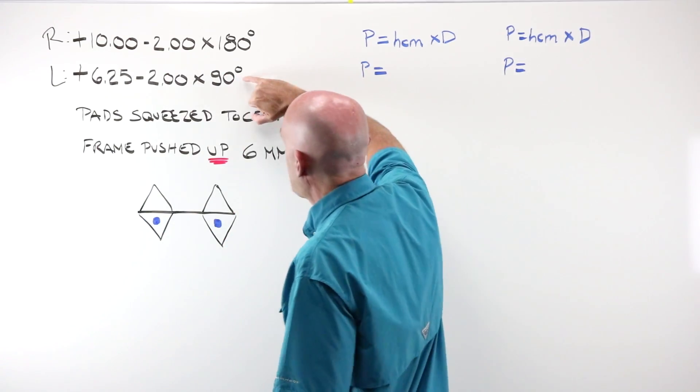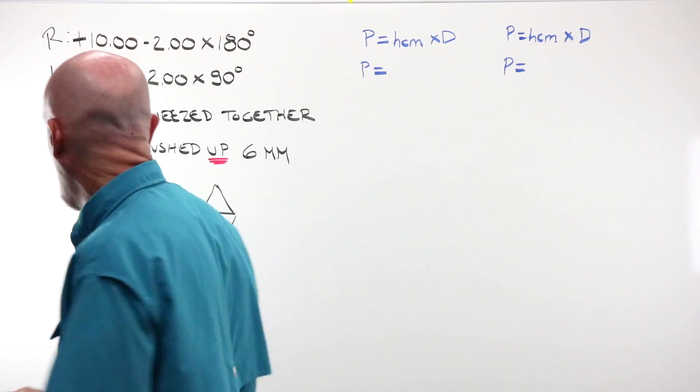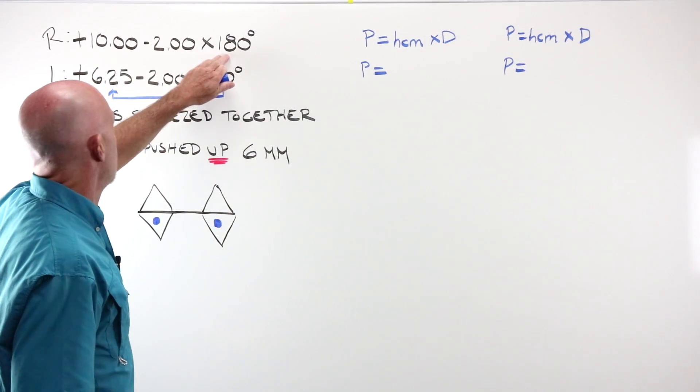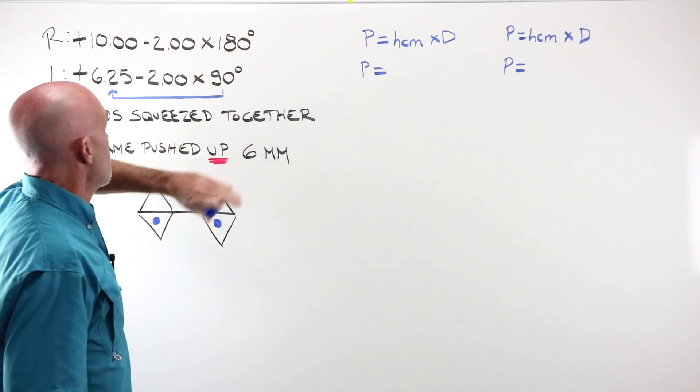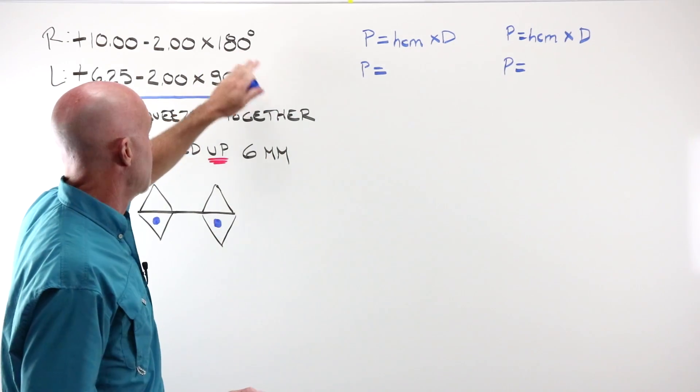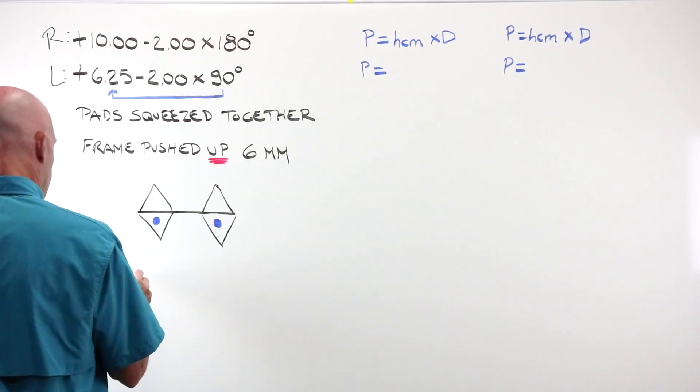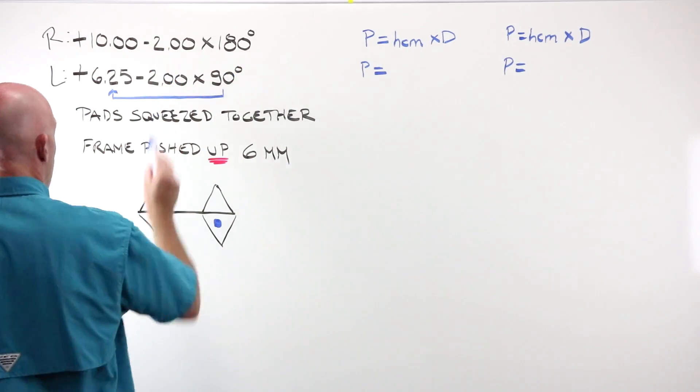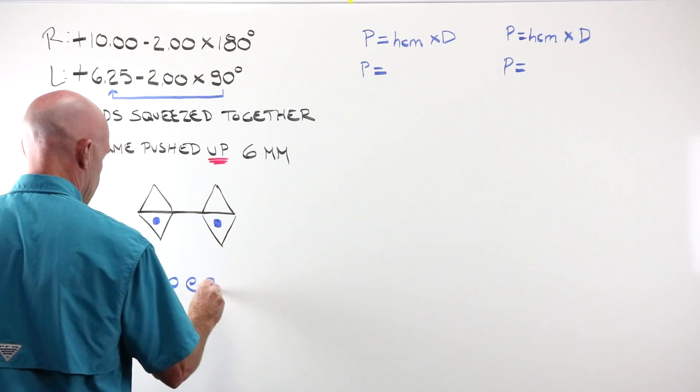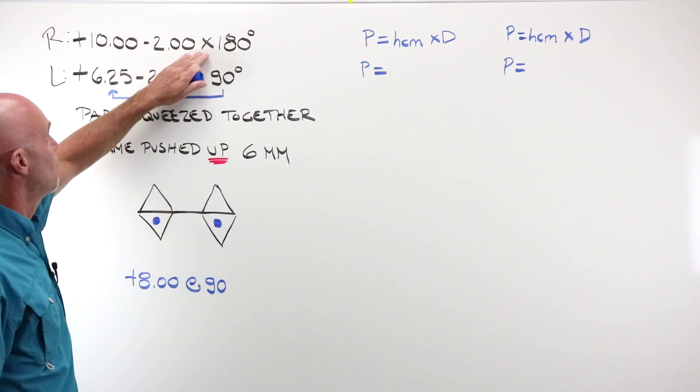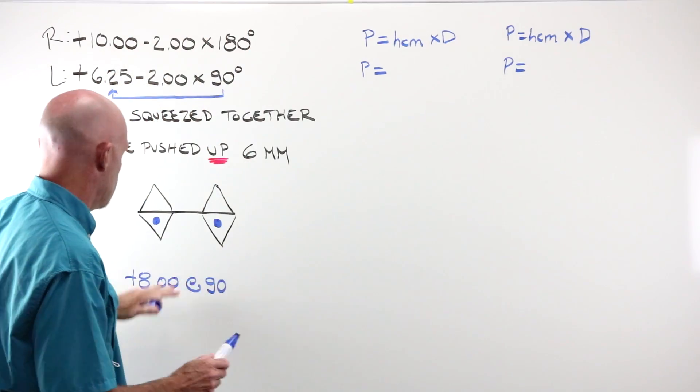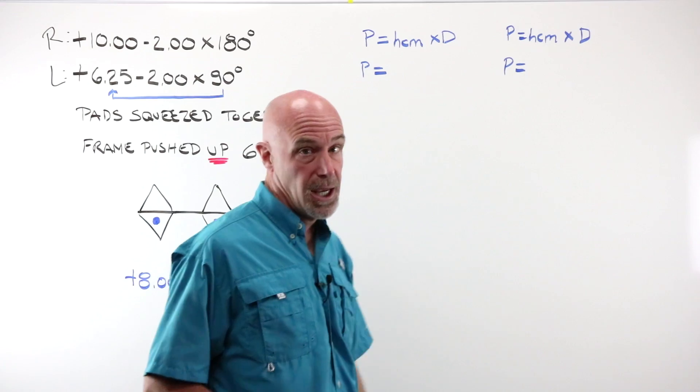So I need to work with the power at 90. In my left, I've got that. In my right, I have 180. Luckily for us, it's simple flat transposition in order to determine the power 90 degrees away at 90. If I have my plus 10 and I add my minus 2, I've got plus 8 at 90. Just flat transposition. Nothing more to it. I go from 180 to 90, I've got plus 8. I don't need any of this anymore. I've got what I need to plug in for my right and my left.